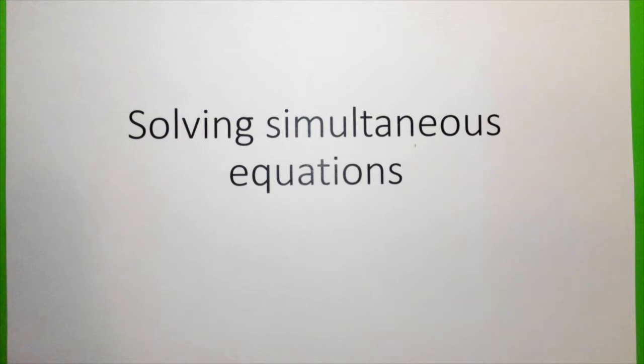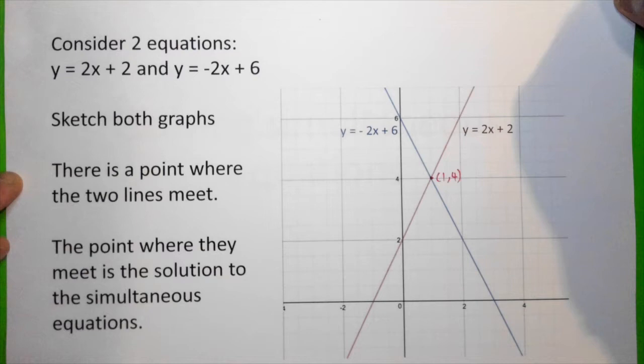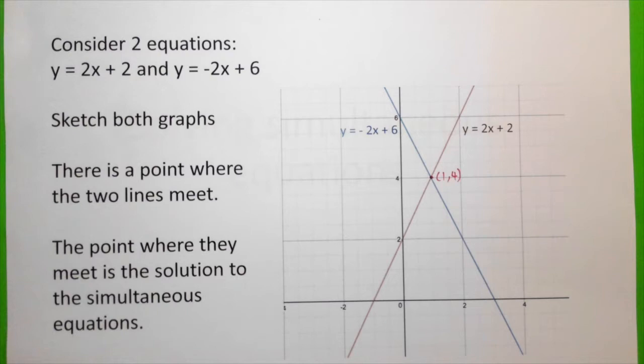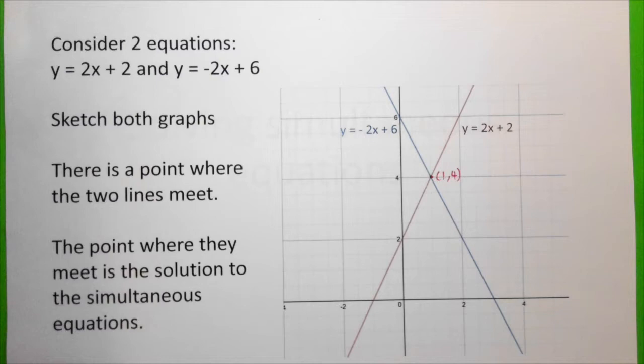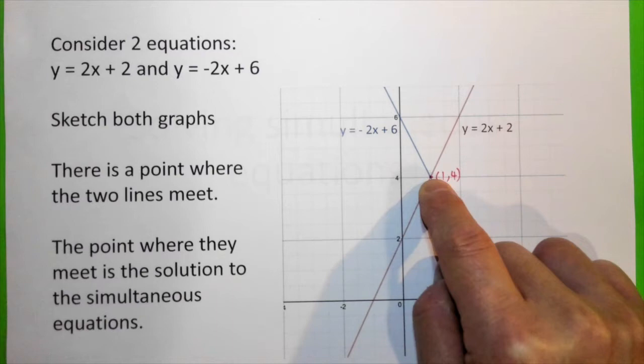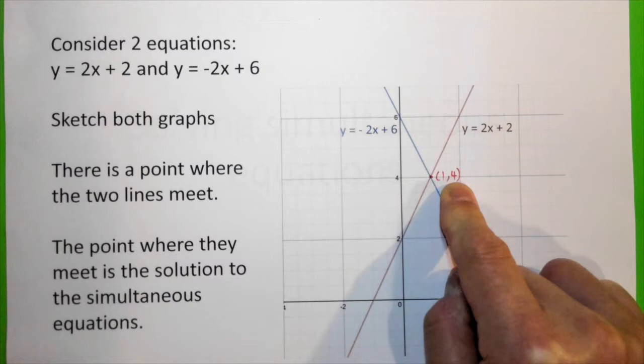In this lesson, we are going to look at solving the simultaneous equation. Let's consider two equations: y equals 2x plus 2 and y equals minus 2x plus 6. Sketching both graphs, the red line here is y equals 2x plus 2, while the blue line is minus 2x plus 6. From the graph, we know that they meet at this point, and the coordinate of this point is x equals 1 and y equals 4.